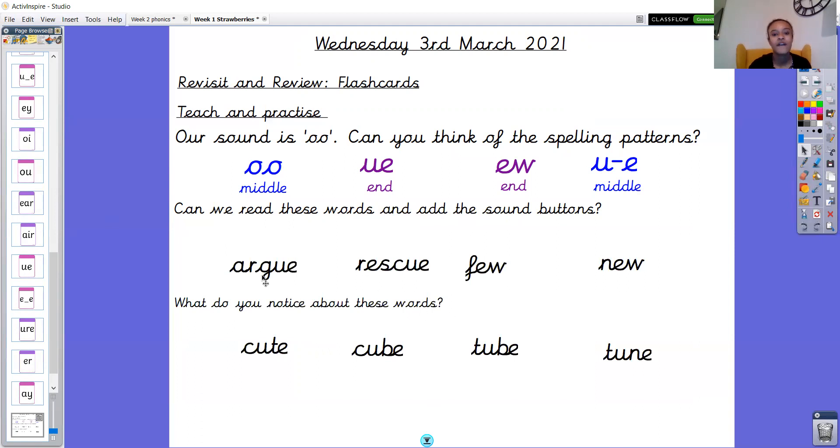So under here I have got four words at the top that have got either UE or EW, and then I have got four split diagraph words. So I'm wondering if you can pause the video to write down these eight words and put the sound buttons on, don't forget what split diagraph sound buttons look like for the last four. Okay, so please pause the video now to do that.